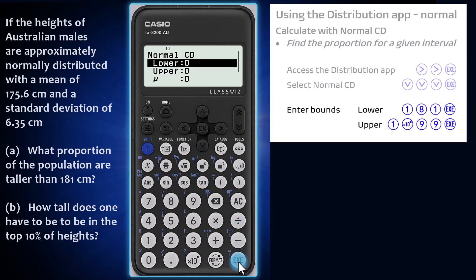First, enter the lower and upper bounds of the interval of interest. As this question asks for the interval of heights greater than 181 centimeters, the lower bound is 181. As for the upper bound, I will enter 1 times 10 to the power of 99, which is an easy way of entering a very large number in place of infinity for calculations such as this one.